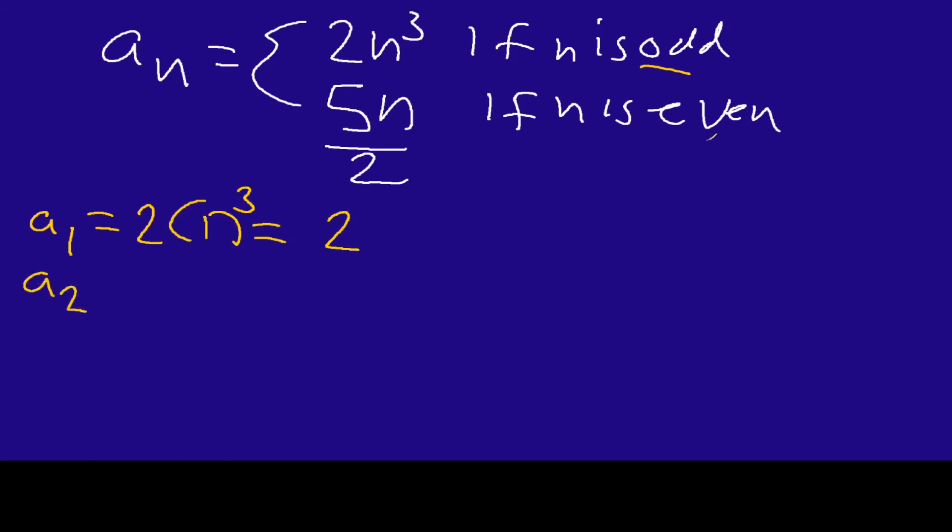Now a_2 - this time is even, so I'm going to use the second formula. I'm going to have five times two, all that over two, and that's going to equal five. You can see how this is working out now.